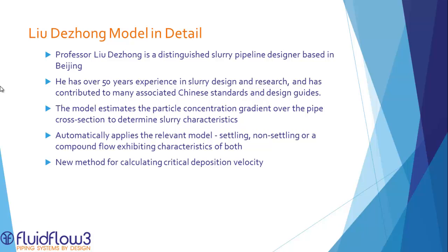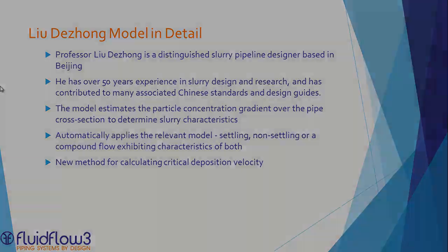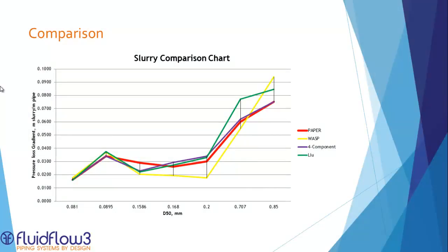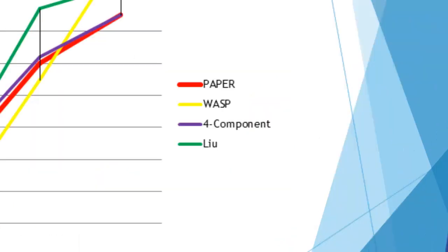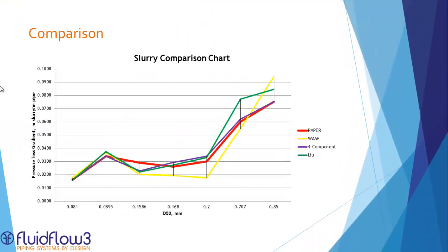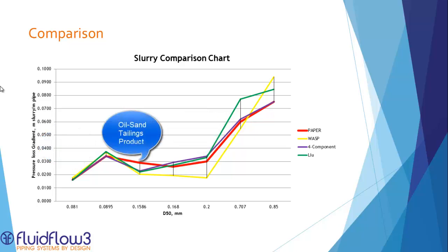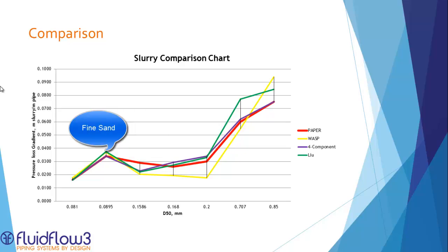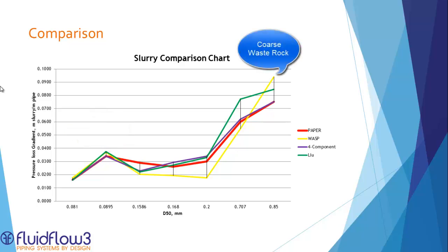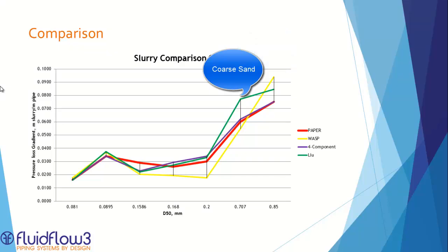The Liu method also has a new method for calculating critical deposition velocity. This comparison chart shows the friction loss profile over increasing D50 for three different models: the reported lab data in red, and the four layer, Liu, and WASP models for comparison. The data also represents different slurry compositions. These two points demonstrate exceptional correlation of the new methods for gold tailings. All three tend to underestimate the oil sands tailings slightly, and again we have exceptional correlation for fine sand. Towards the coarser end of the spectrum, the four layer model continues to offer an excellent degree of correlation for coarse waste rock and coarse sand.